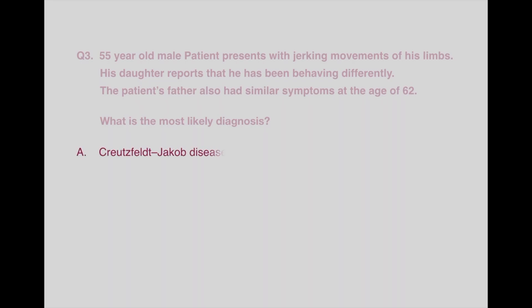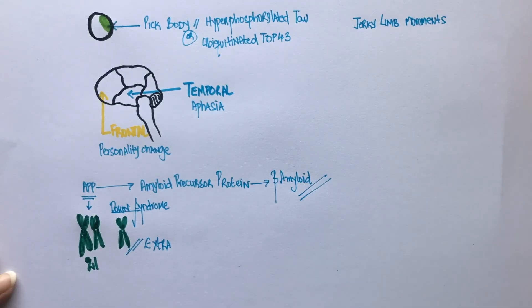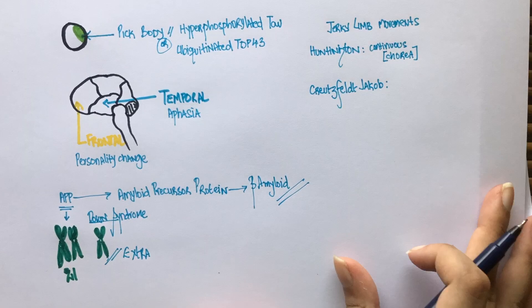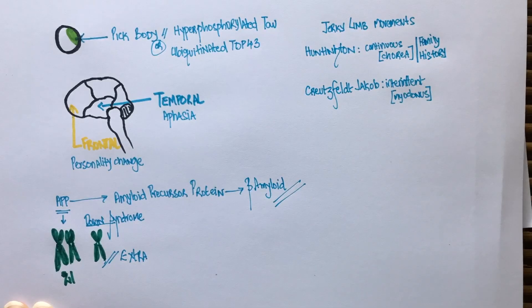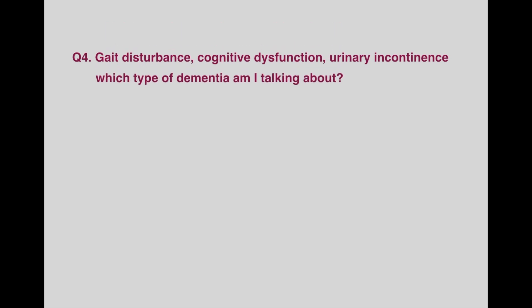Option A, Creutzfeldt-Jakob disease. Option B, Huntington disease. Option C, Pick disease. When there is a patient who has dementia and jerky limb movements, think of Huntington's and Creutzfeldt-Jakob disease. The difference between the two is that the jerky movement in Huntington's will be continuous in nature, while the movement in Creutzfeldt-Jakob disease will be intermittent. Also, patients with Huntington's will have a positive family history, while those with Creutzfeldt-Jakob disease will not.